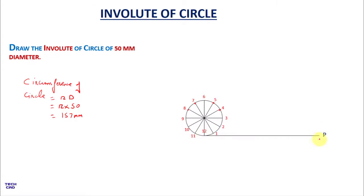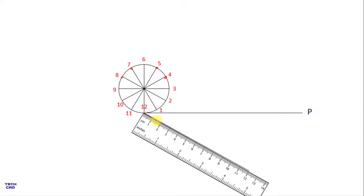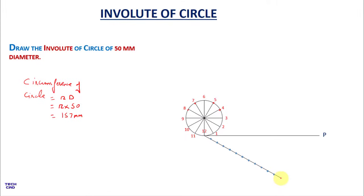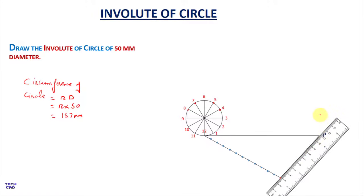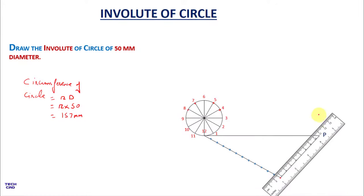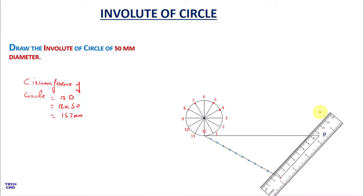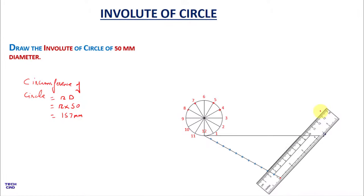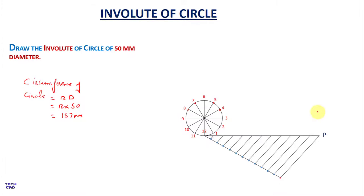Now divide this 157 mm line into 12 equal divisions. Take an inclined line from point 12 with a length of 12 cm, then divide this line using a scale into 11 equal parts. From the last point, make a line with the scale and join it to point P. Then take the scale forward to each successive point and make parallel lines, so that all lines are parallel to the original line.